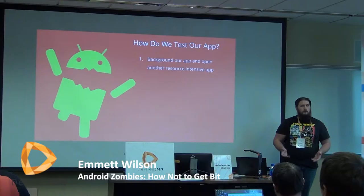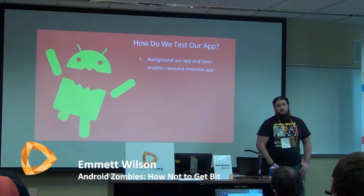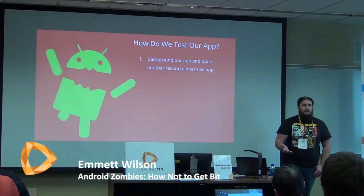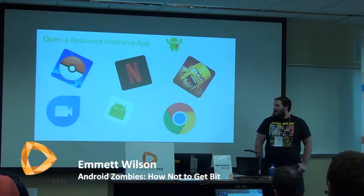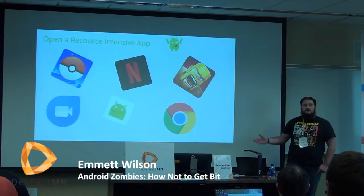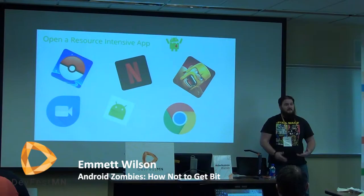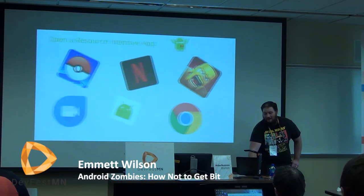The first method is to background your app and open some resource-intensive app that's going to kill it. This is what your users experience in the field. Maybe they have a budget phone and every time they change apps they experience process death because it doesn't have much RAM, or maybe they have 150 Chrome tabs open. Apps like games and Netflix, if they're not shutting down your app while it's in the background, they're not doing their job right — they want high definition video and engaging features. Good for them if they're helping shut down my app.